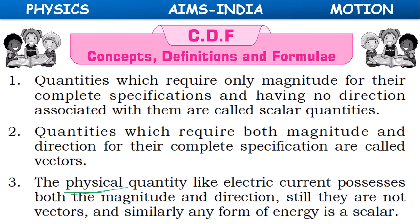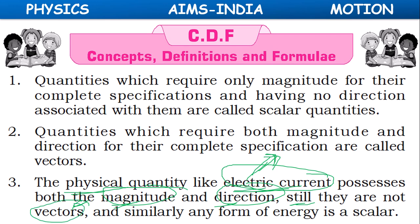Some physical quantities like electric current possess both magnitude and direction, but still are not considered vectors. Also, any form of energy — solar energy, chemical energy, nuclear energy — is a scalar quantity.